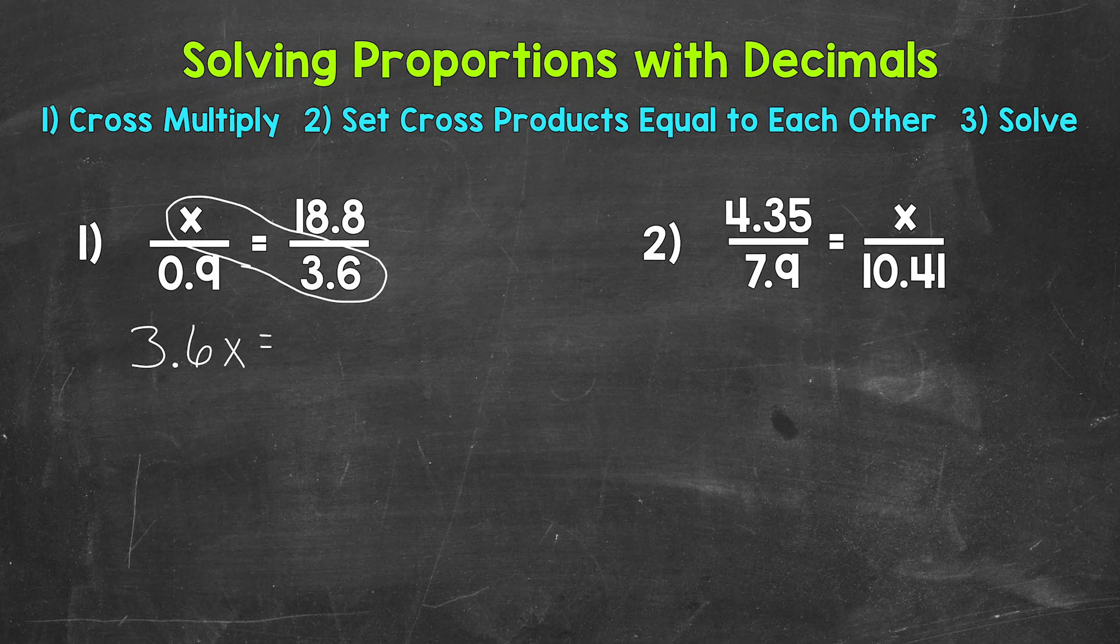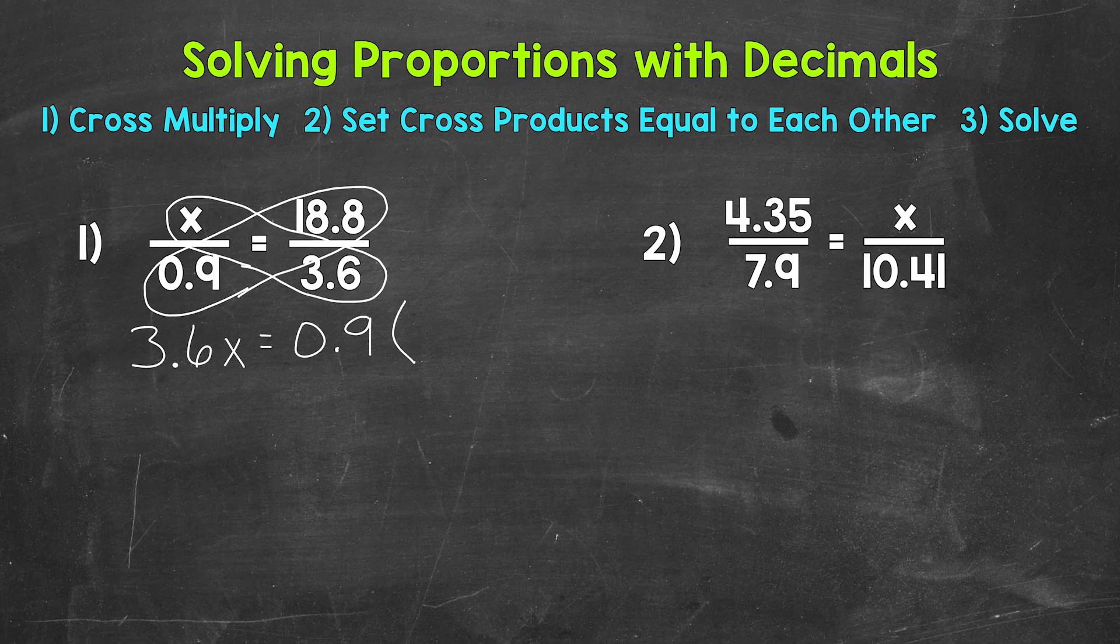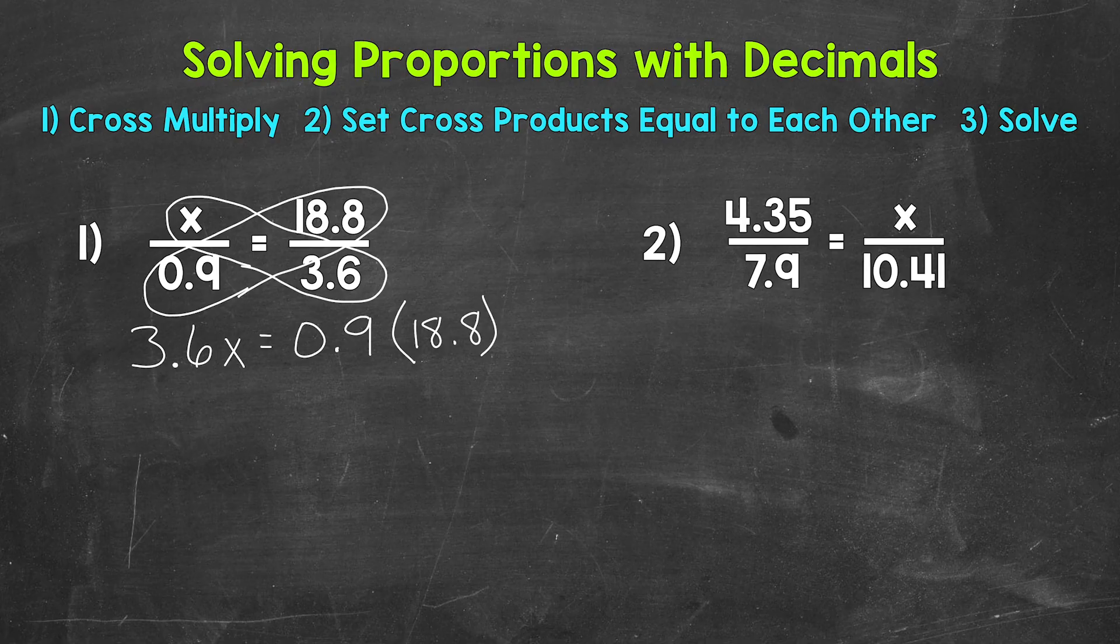Bring down our equal sign, and then we have 9 tenths times 18 and 8 tenths. I'm going to use parentheses to represent multiplication. That way, there isn't any confusion between x's used for variables and x's used to represent multiplication.